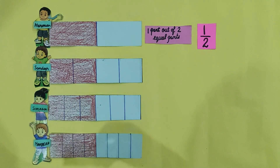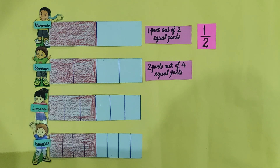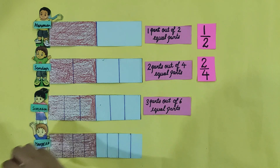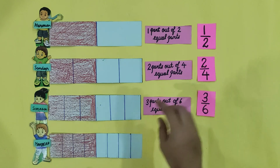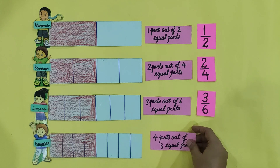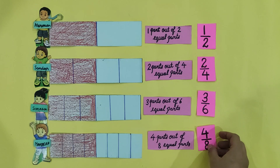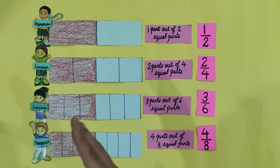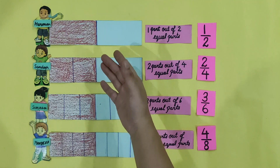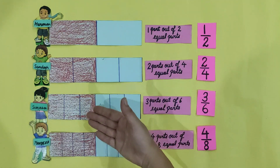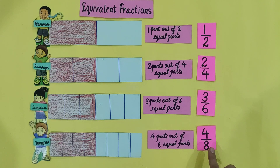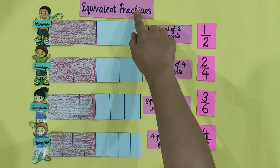Sandeep coloured 2 parts out of 4 equal parts, and we write it as 2 by 4. Simran coloured 3 parts out of 6 equal parts, and we write it as 3 by 6. Mandip coloured 4 parts out of 8 equal parts, and we write it as 4 by 8. Students, you saw each student divided the sheets into different parts and also coloured different parts of the sheets. But the coloured portion of all the sheets is the same. Different fractions which describe the same part of the whole are known as equivalent fractions. 1 by 2, 2 by 4, 3 by 6, and 4 by 8 describe the same part of the whole, so these are equivalent fractions.